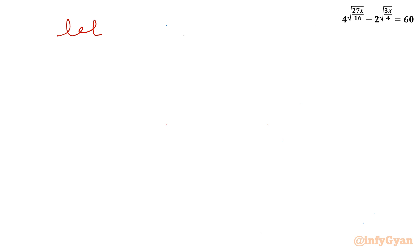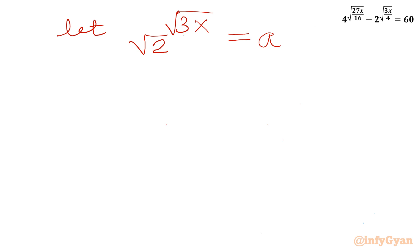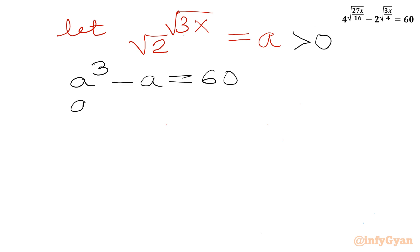Our substitution is: square root 2 raised to the power square root 3x equals a, with the condition that a must be greater than 0. So the equation becomes a cubed minus a equals 60. Taking all terms to one side: a cubed minus a minus 60 equals 0.